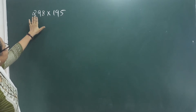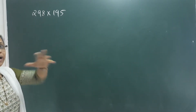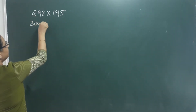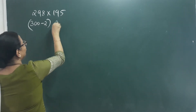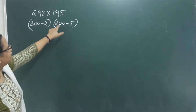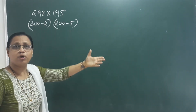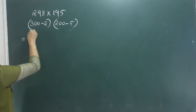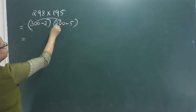Take the number 298. If we have to multiply this, we will multiply it by 300, then minus 2. So this becomes 300 minus 2 multiplied by something. We get 2 into 3 equals 6.